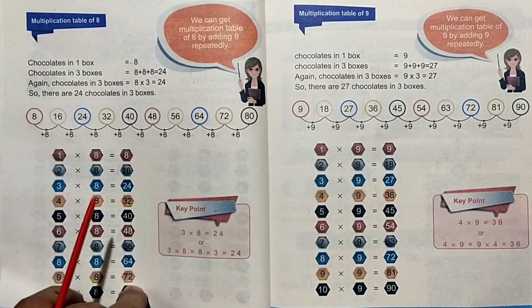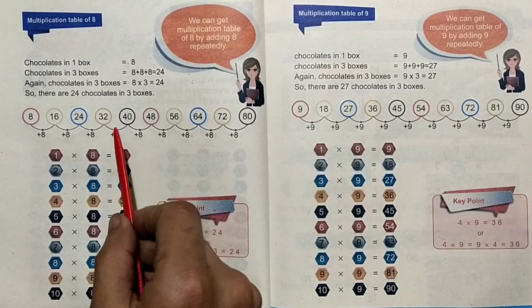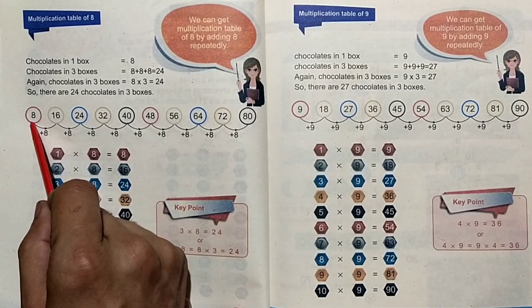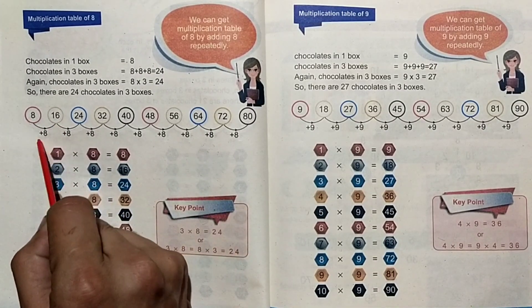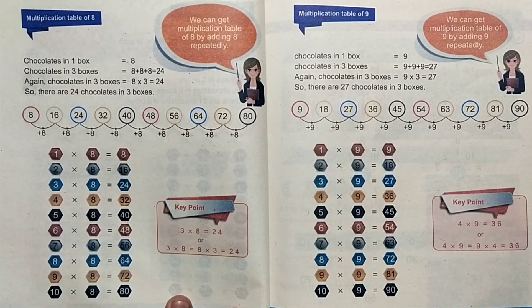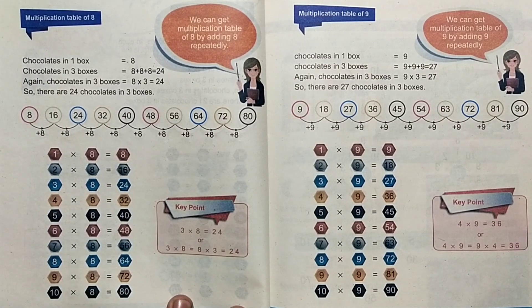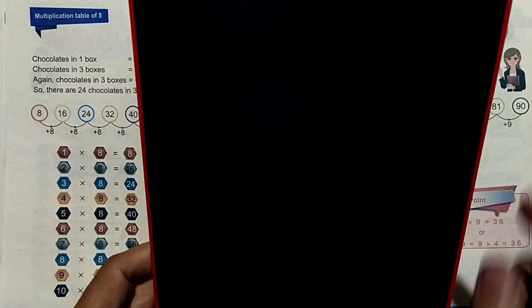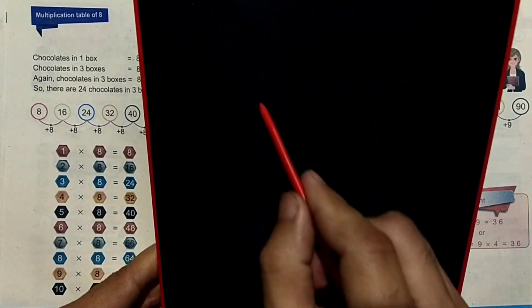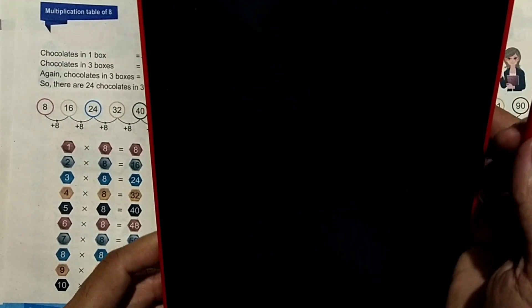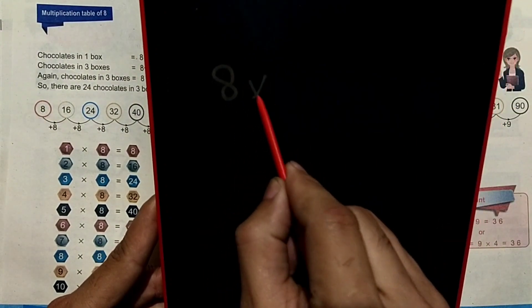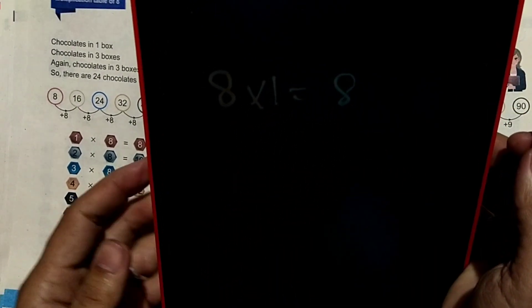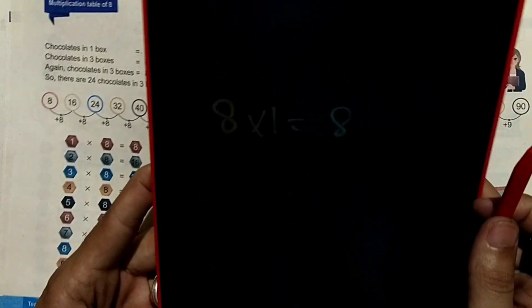Now let's go ahead to the eight table. Eight: eight. The number eight — eight multiply one is equal to eight.